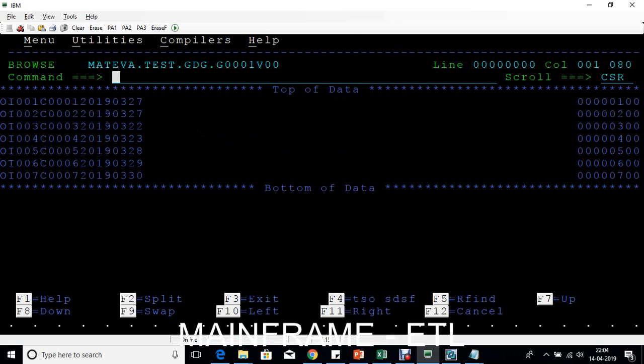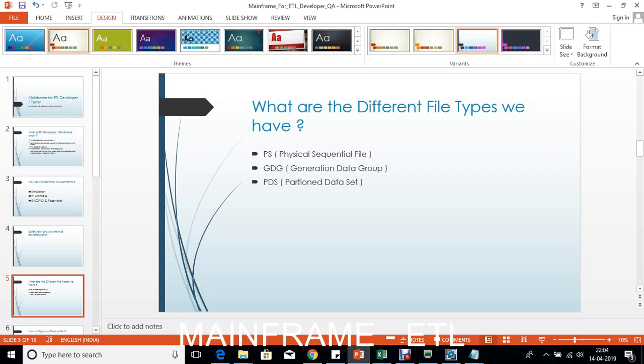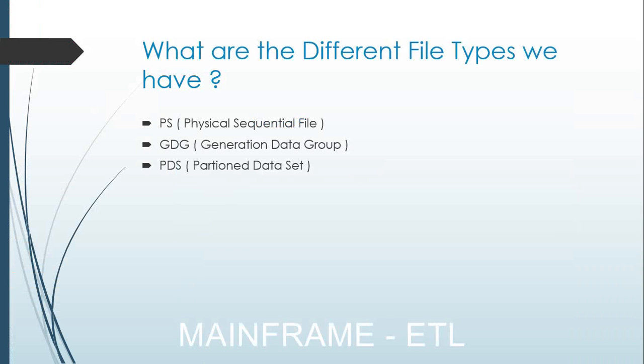To summarize, the different kinds of files on the mainframe are: physical sequential file (PS), GDG (generation data group), and partition data set (PDS). You access a GDG the same way as a PS file — just type B to browse it.